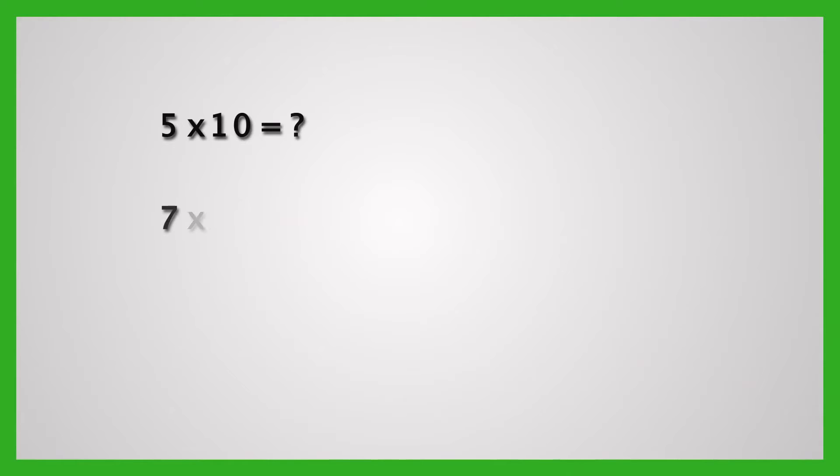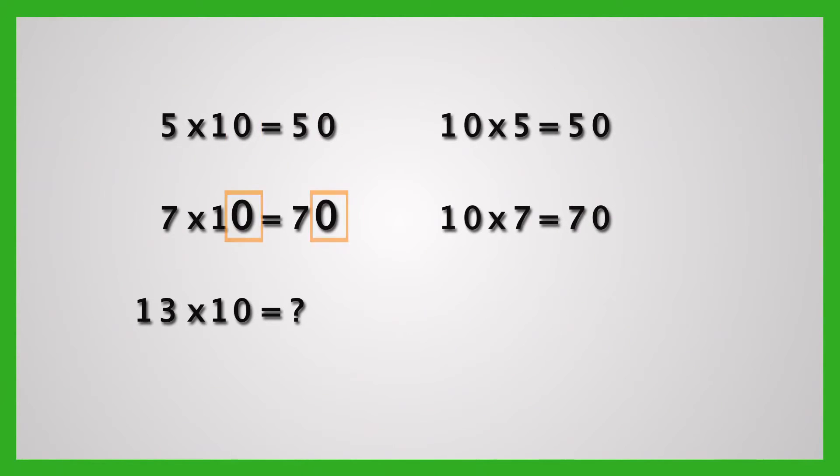Check whether students know that when any number is multiplied by 10, the product is the original number with a zero placed after it. For example, 5 multiplied by 10 is equal to 50. And 7 multiplied by 10 is equal to 70. 13 multiplied by 10 is equal to 130. And so on.